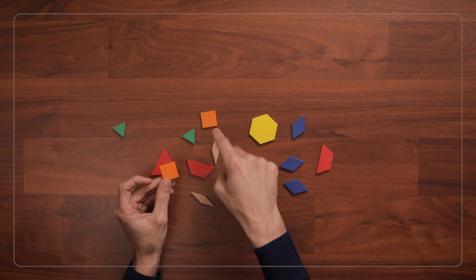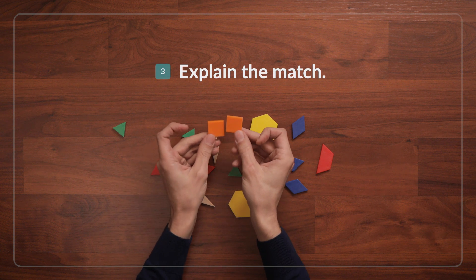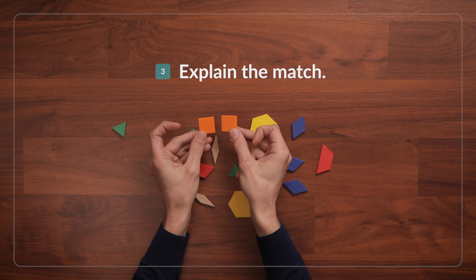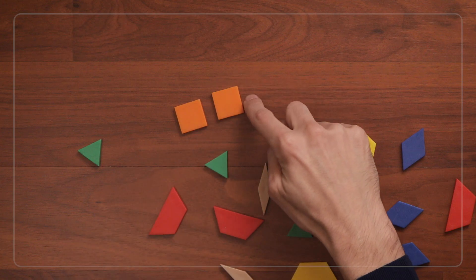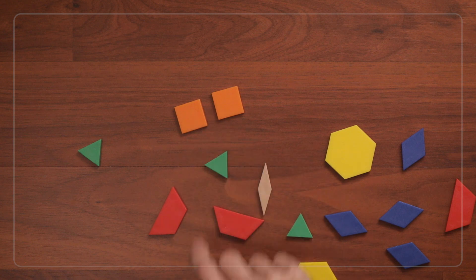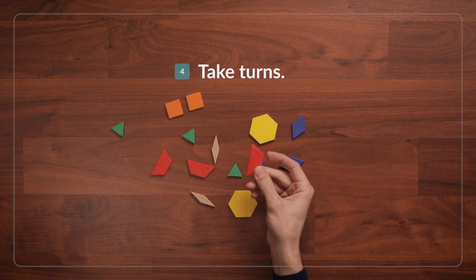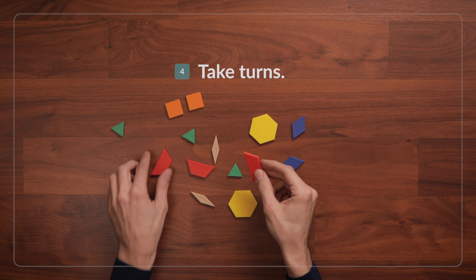Once the child finds the match, have them explain how they know it's an exact match. Help them include shape characteristics, like the shape's name and number of sides, in their explanations. Then let them choose a shape from the pile and you find an exact match.